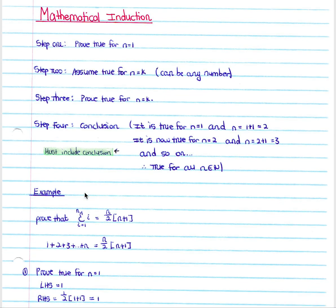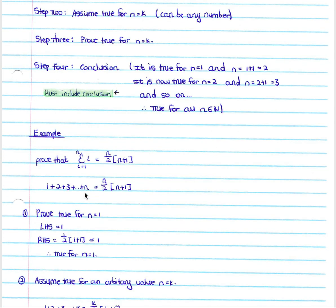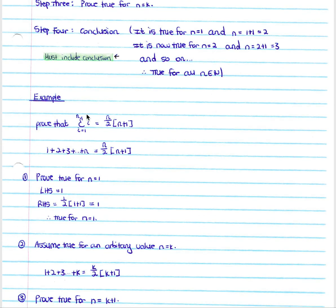Looking at an example: prove that the sum from i equals 1 to n of i equals n over 2 times (n plus 1). We take the left hand side — summing from 1 to n — and the right hand side is n over 2 times (n plus 1).